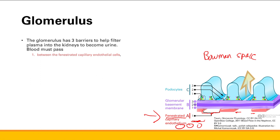Once it gets through the fenestrated capillary endothelium, the next step is to go through the glomerular basement membrane. After that, it has to go through the podocyte foot processes. A podocyte is a cell that wraps around the capillaries of the glomerulus. They have foot processes that overlap, leaving little spaces in between where different particles can get through.